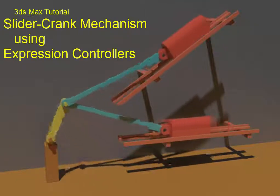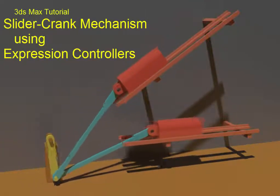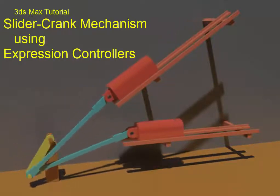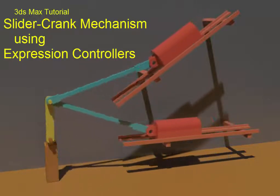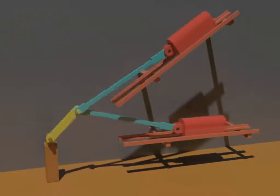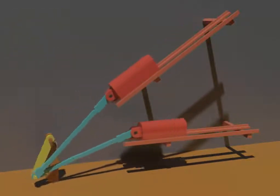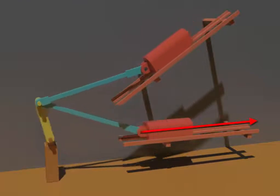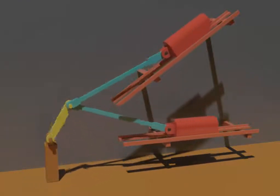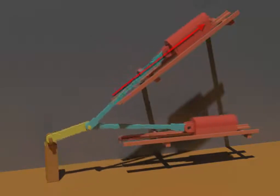In this tutorial, we will look at the steps involved to animate a slider crank mechanism in 3D Studio Max using expression controllers. We will start with a piston that is traveling in a horizontal direction and then we will modify it to show how we can animate a piston traveling in any direction.